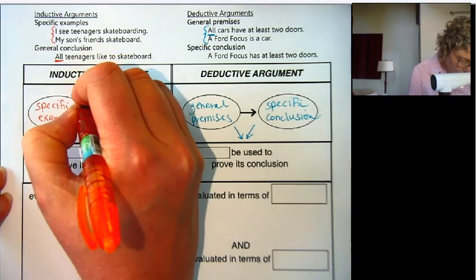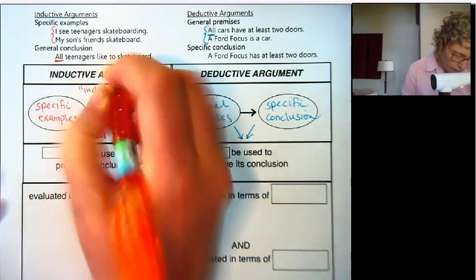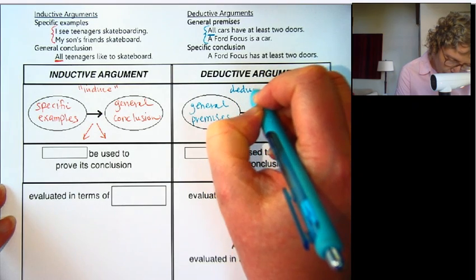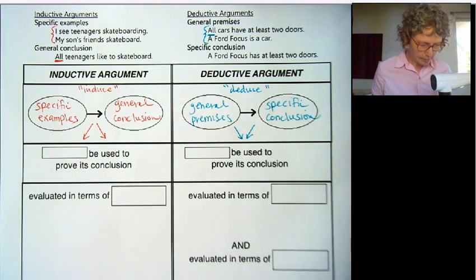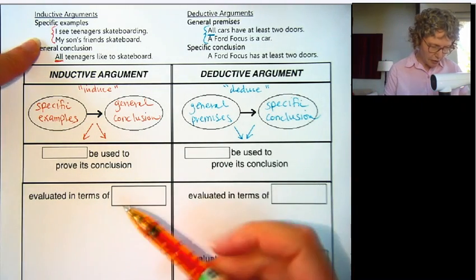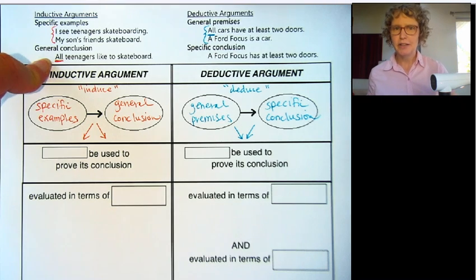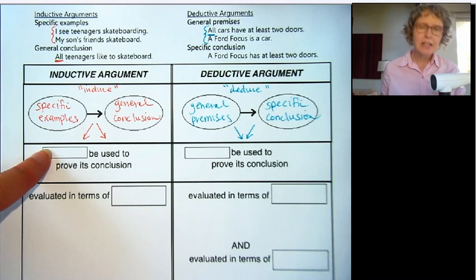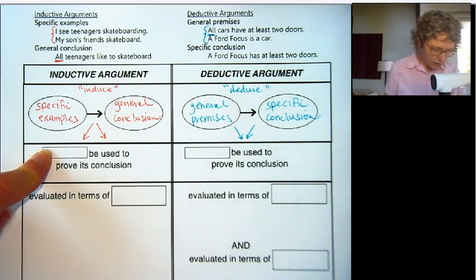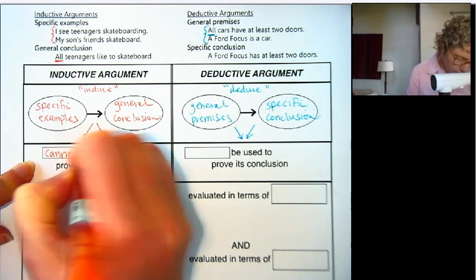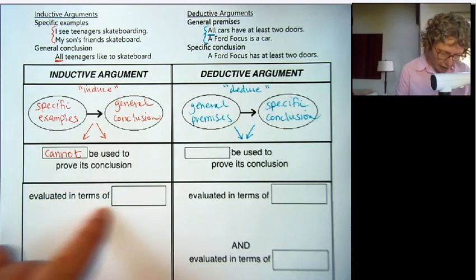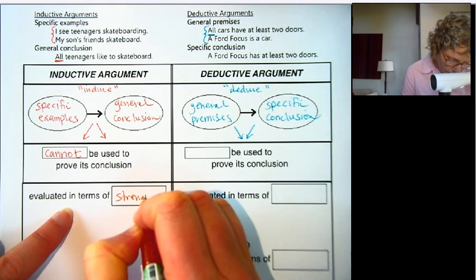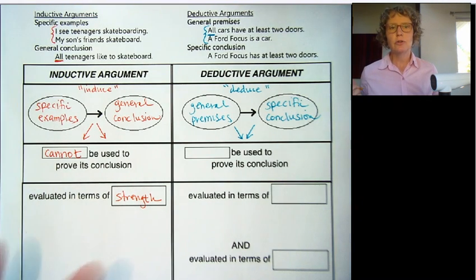So let's write induce and deduce. Kind of makes me think of reduce in a way, because we're starting general and going to specific. We talked about this inductive argument being an overgeneralization — we can't say all teenagers like to skateboard just from a few examples. So we cannot use an inductive argument to prove its conclusion.